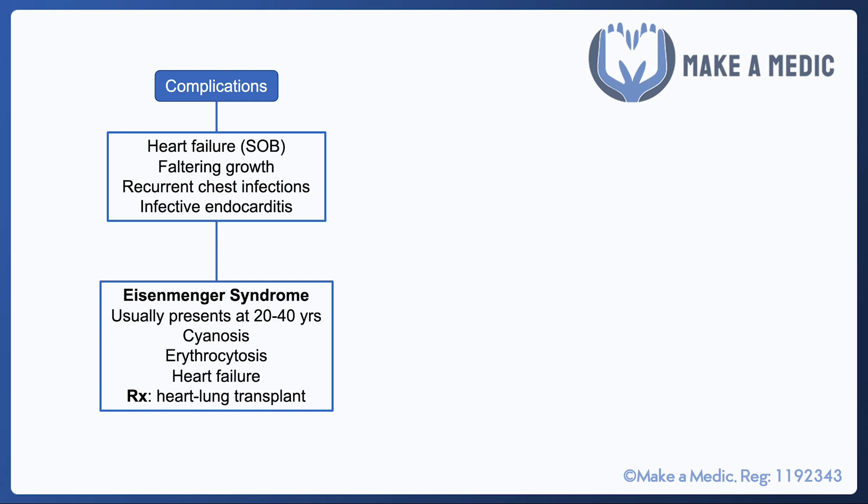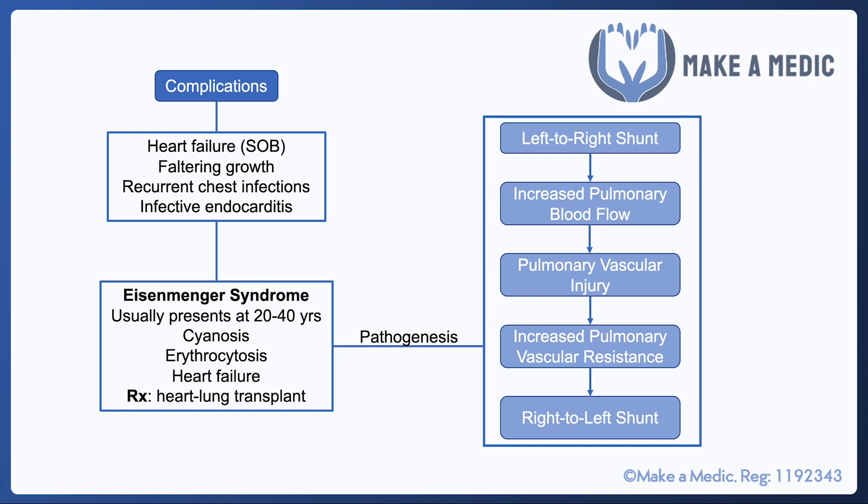It's a condition that usually presents around 20 to 40 years of age, and it presents quite dramatically with heart failure, cyanosis, and erythrocytosis. The treatment options are very limited — aside from a heart-lung transplant, there isn't a huge amount that can be done.